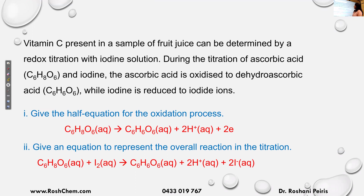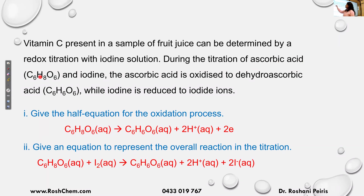Vitamin C present in a sample of fruit juice can be determined by a redox titration with iodine solution. During the titration of ascorbic acid, which is vitamin C, the ascorbic acid is oxidized to dehydroascorbic acid, while iodine is reduced to iodide ions.